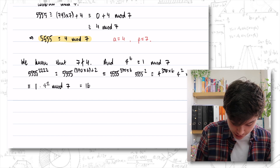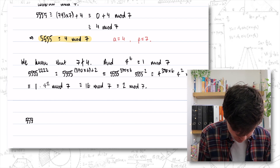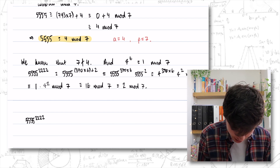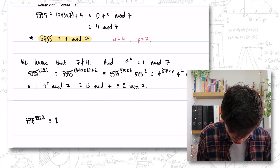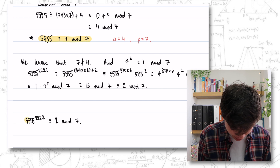So we have 1 times 4 squared modulo 7, which is 16 mod 7. How many multiples of 7 can I take off 16 and still be positive? I can take off 7 to give 9, and take off another 7 to give 2. So 5,555 to the power of 2,222 is congruent to 2 modulo 7. We're doing modulo 7 because we want the expression to be divisible by 7.